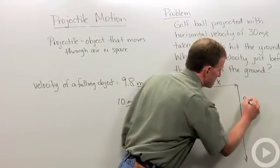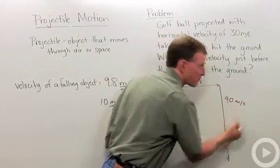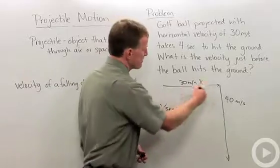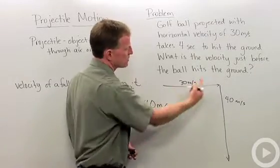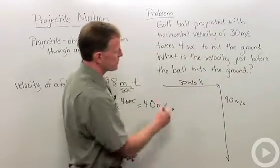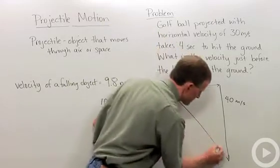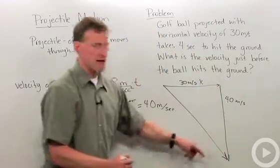So my y velocity is 40 meters per second. And again, adding vectors, I have 30 meters per second along the x, and I have 40 meters per second along the y. I'm going to get that as my final velocity.